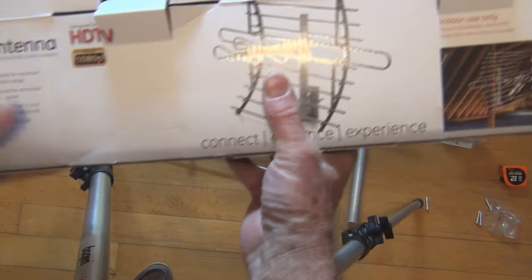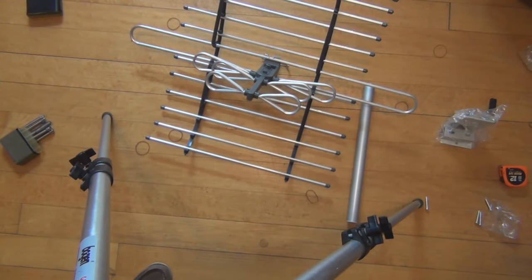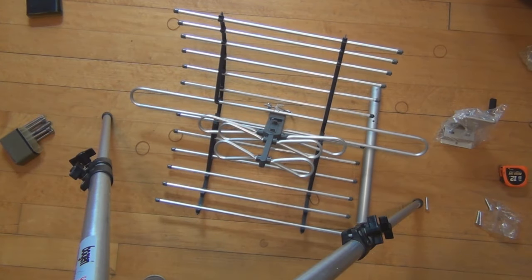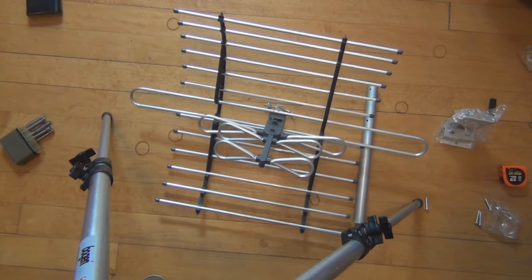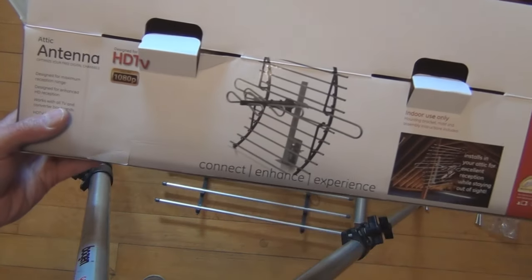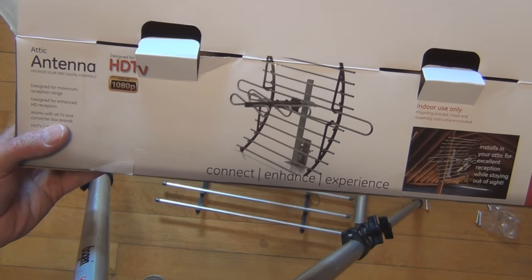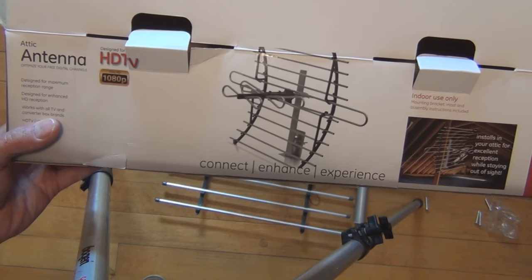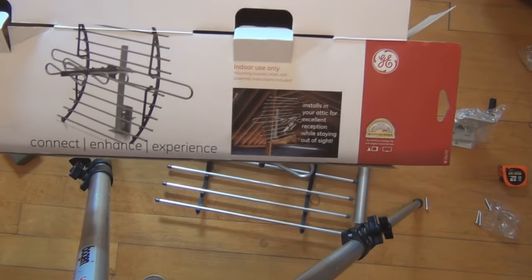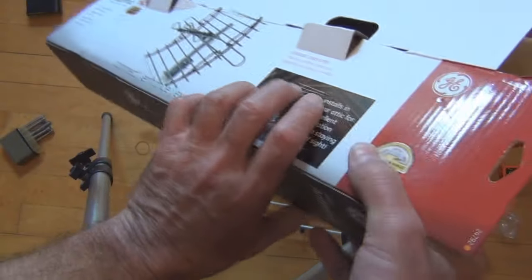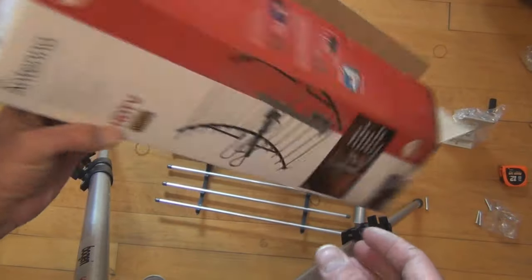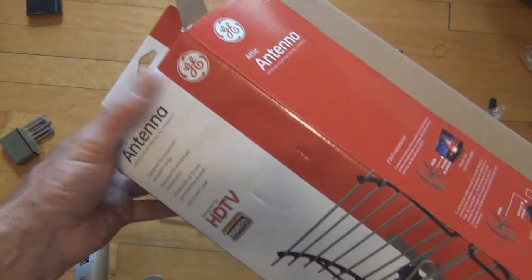So that's it. I think I'll do a separate video on comparing the reception of this antenna to the flat antenna I have in the window, and I'll show you how I have it attached to the rotor. But for now this is the unboxing of the antenna. It's an HDTV indoor 1080p antenna and I purchased it off of Amazon. I guess this is made by GE.